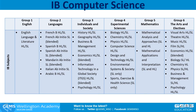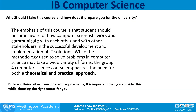Computer Science is a group 4 subject. It's an experimental science offered alongside other science subjects, at both higher level and standard level. In this subject, students study the design, development, and analysis of software and hardware used to solve problems in a variety of business, scientific, and social contexts. The main element of the course is problem solving and programming.